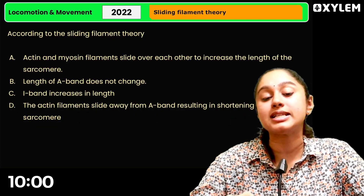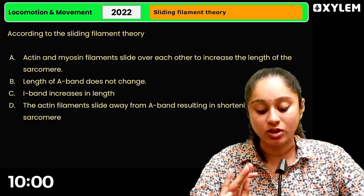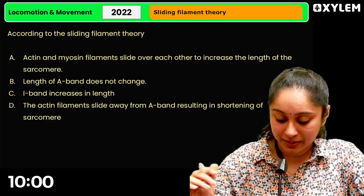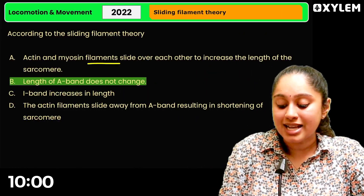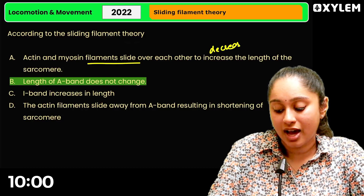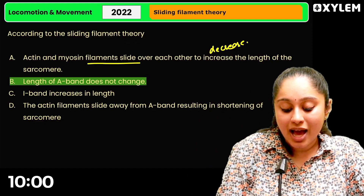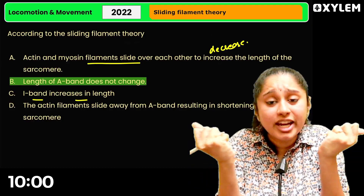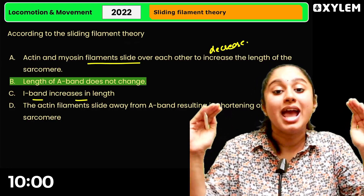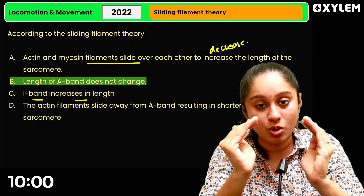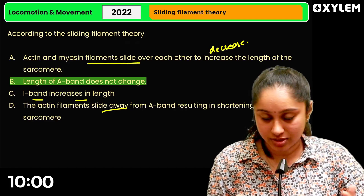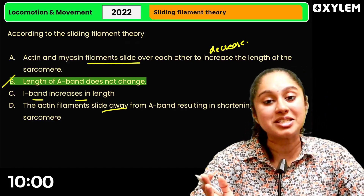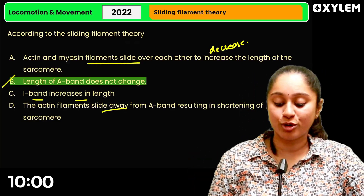In the previous class, we had a question about the sliding filament theory — according to the options, which statement is correct? When filaments slide over each other, there is obviously a decrease in length. If you are interested in the shortening of the sarcomere, you can see the answer. Very nice.